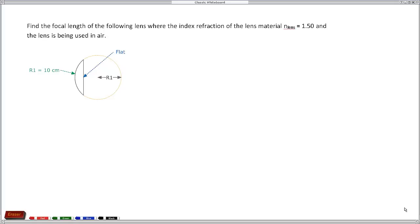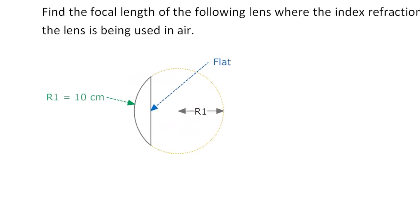We're going to work another lens maker problem, but this time we've got a different situation. We've got what's called a plano-convex lens. This really just means that one side is a plane, flat, and the other side is convex.